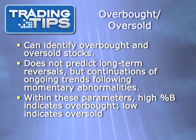Bollinger Band Percentage B can be used to identify when stocks are overbought or oversold. This works best with stocks that are in fairly clear medium-term trends — for stocks in uptrends that are temporarily oversold on a pullback, or stocks in downtrends that are temporarily overbought on a rebound. In other words, Bollinger Band Percentage B does not really predict long-term reversals, but can spot situations in which a stock's trend is likely to continue following a momentary abnormality.